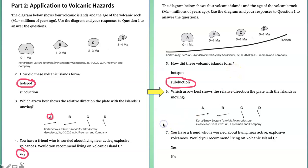Which arrow best shows the relative direction that the plate with the islands on it is moving? The answer is C. And if you are a little confused by that, remember these two plates are moving towards each other at the trench. And so, this is the relative direction. C is this arrow right here.